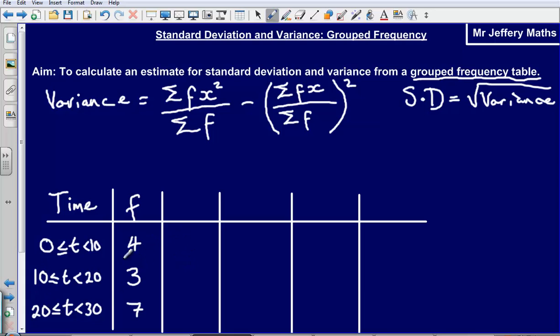Now what we're going to have to do with this information is, because it has been grouped, we're going to have to find the midpoints of our data. And our midpoints are simply referred to as x in this formula. So when we're talking about frequency multiplied by x, we're talking about the frequency multiplied by the midpoint. Here we're talking about the frequency multiplied by the midpoint squared.